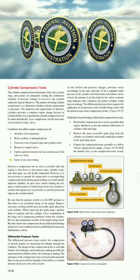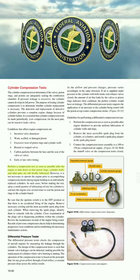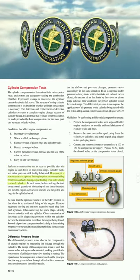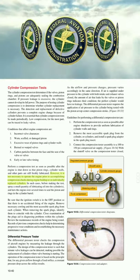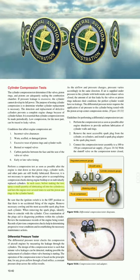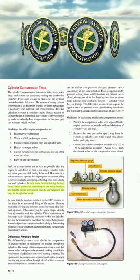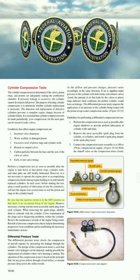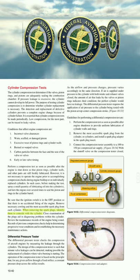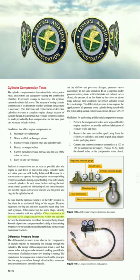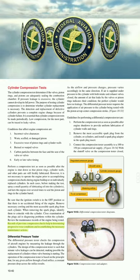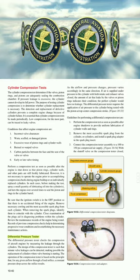Perform a compression test as soon as possible after engine shutdown so that cylinder walls and rings are still freshly lubricated. Before testing, spray a small quantity of lubricating oil into the cylinders and turn the engine over several times. Ensure ignition switches are in the off position. Remove the most accessible spark plug from each cylinder, identifying them to coincide with the cylinder. Review maintenance records, as previous compression checks help determine progressive wear conditions. The differential pressure tester checks compression by measuring leakage through the cylinders, and can detect minute valve leakages to identify cylinders where valve burning is starting.